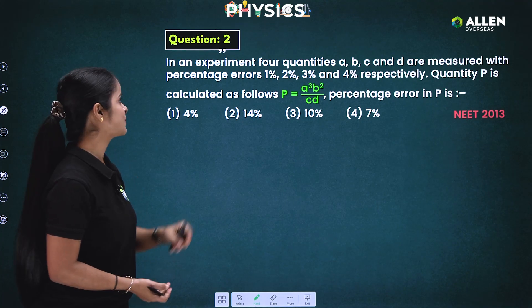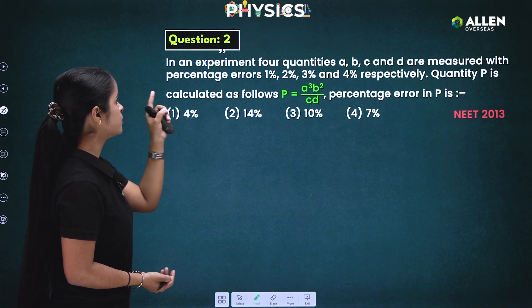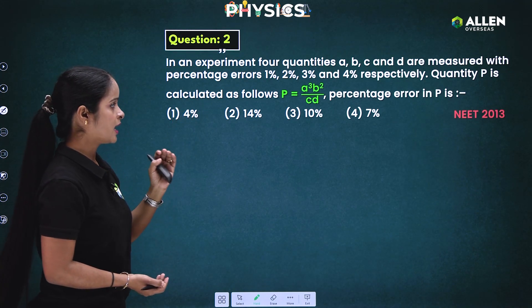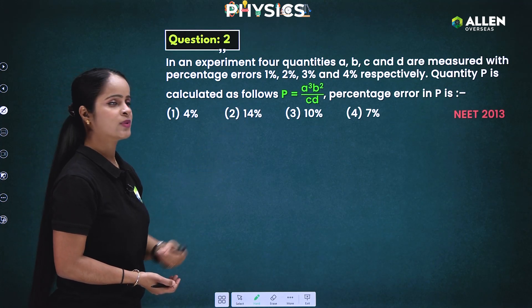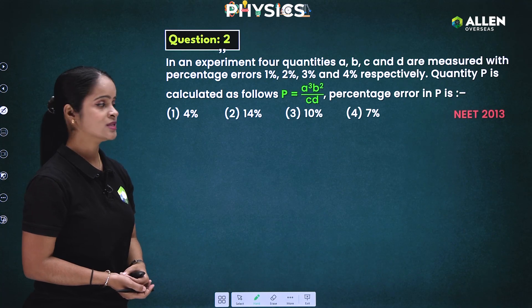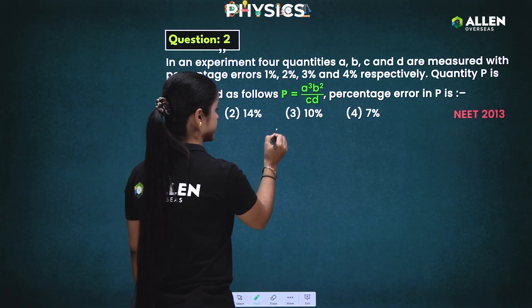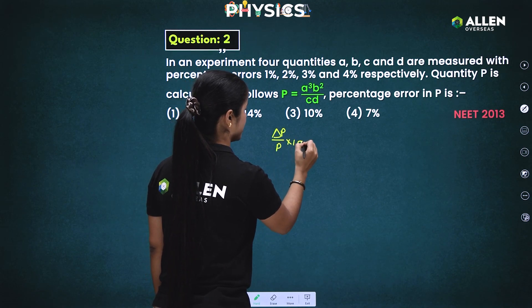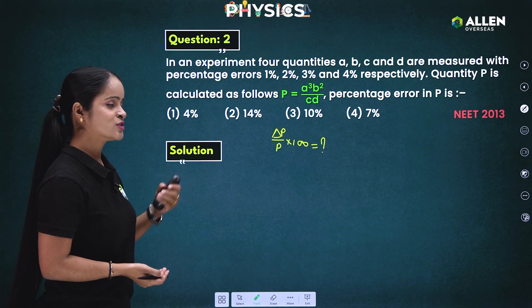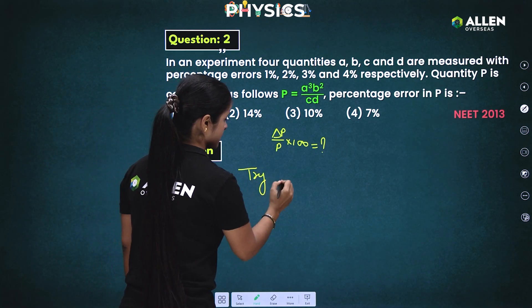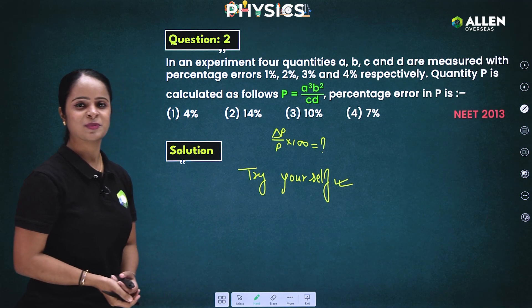In an experiment, four quantities A, B, C, and D are measured with percentage errors 1%, 2%, 3%, and 4% respectively. Quantity P is calculated as P equals A cubed times B squared divided by C times D. The percentage error in P is what we need to find — that is delta P upon P into 100. This question is given as homework, so try it yourself and send the answer in the comment box.